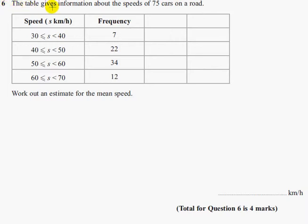Question 6. The table gives information about the speeds of 75 cars on a road. So you've got speed in kilometres per hour, and you've got your frequency, how many times it happened, in this case the number of cars.